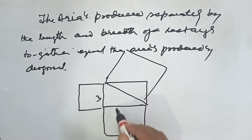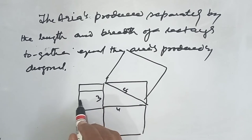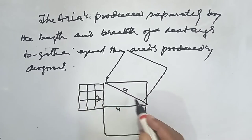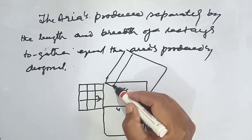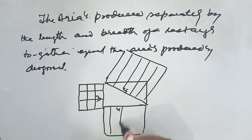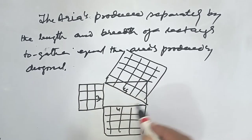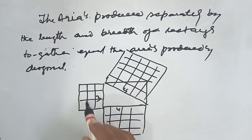Suppose this is 3, this is 4, this is 5. So we divide this into small squares like this: 1, 2, 3, 4, 5. 1, 2, 3, 4, like this. And you count the small squares.